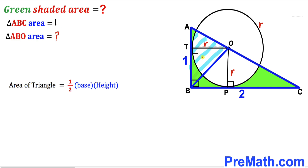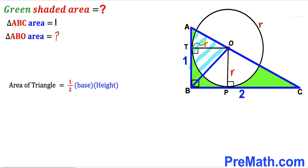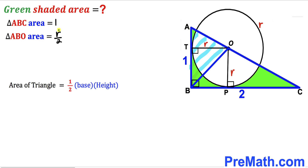Now we calculate the area of triangle ABO using the same formula: area equals one-half times base times height. The base of triangle ABO is one unit, whereas the height is the radius r. So the area of triangle ABO equals one-half times one times r, which simplifies to r divided by two.